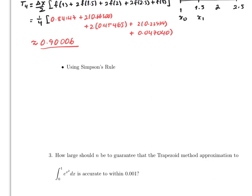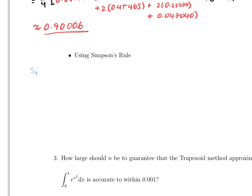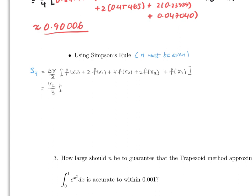For Simpson's rule, S(4) uses n equals 4, which must be even — otherwise the formula doesn't work. The formula is (Δx/3) times [f(x₀) + 4f(x₁) + 2f(x₂) + 4f(x₃) + f(x₄)], where the coefficients alternate 4 and 2. In our case this is (1/2)/3 = 1/6 times [f(1) + 4f(1.5) + 2f(2) + 4f(2.5) + f(3)].